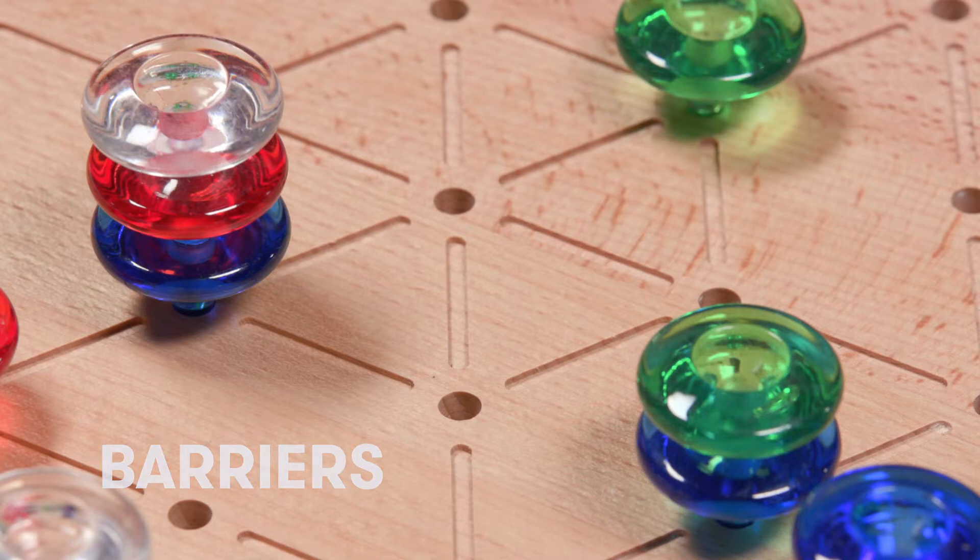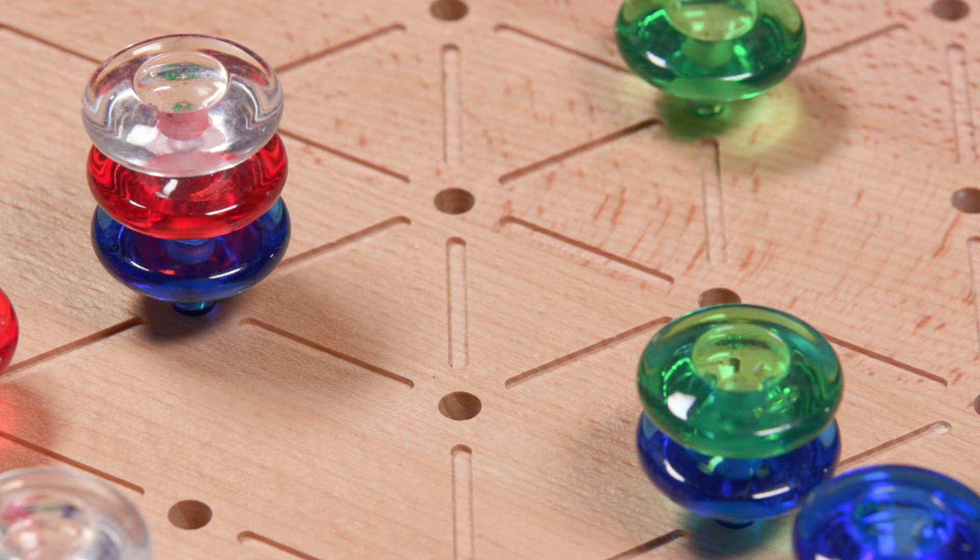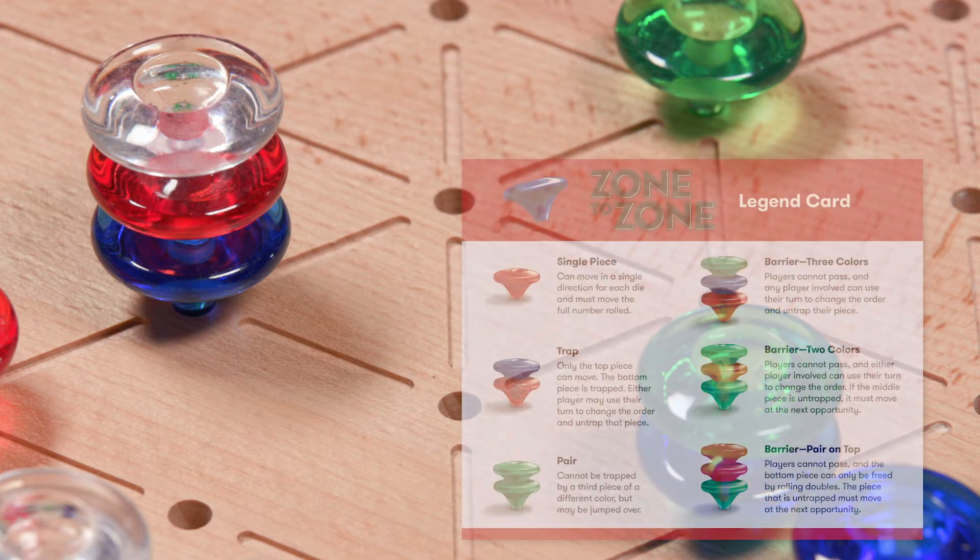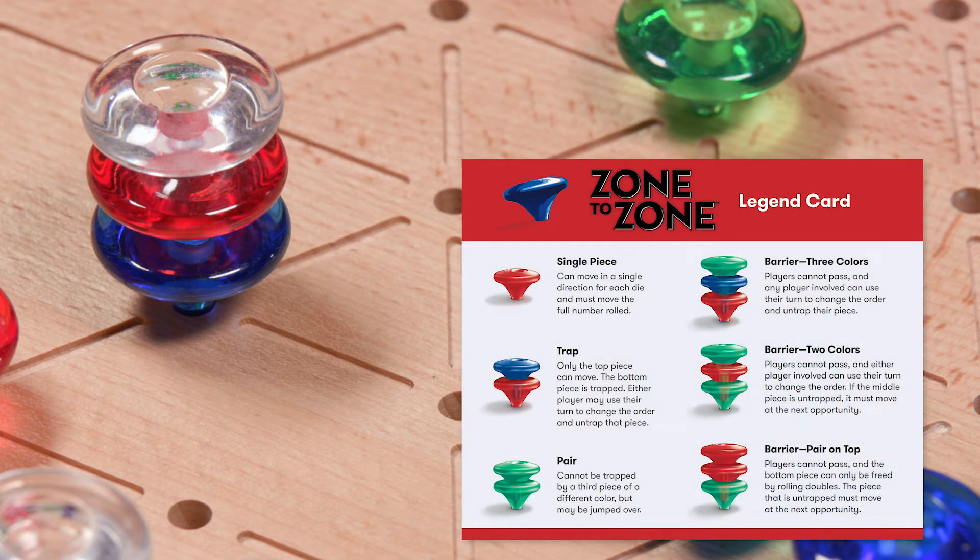A barrier is created by any three pieces that are stacked together. You may not place a fourth piece on top and you may not move past a barrier. Barriers apply to all players. Use the legend card as a quick reminder for traps and barriers.